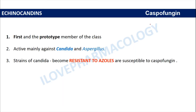Caspofungin is the first and prototype member of the echinocandin class. They are active mainly against Candida as well as Aspergillus infections, and are also effective against strains of Candida which have become resistant to azoles.